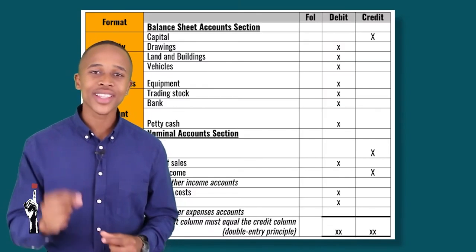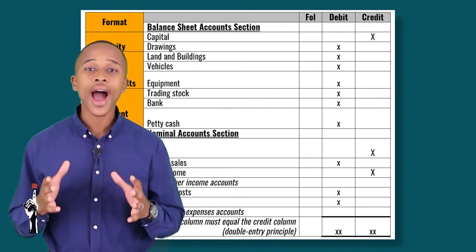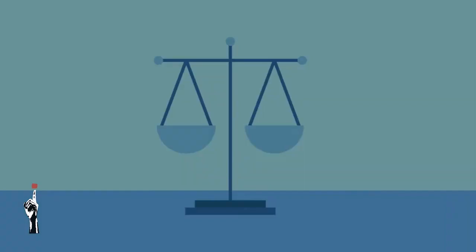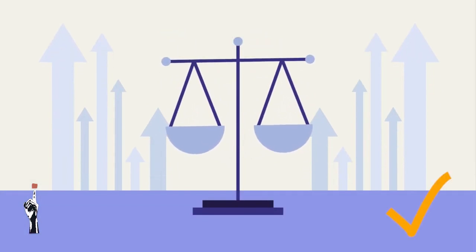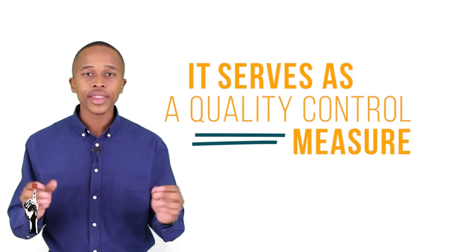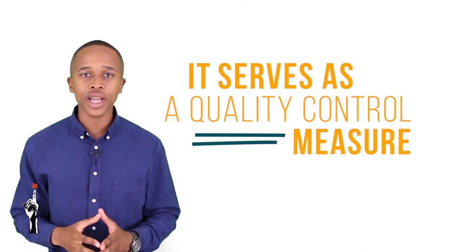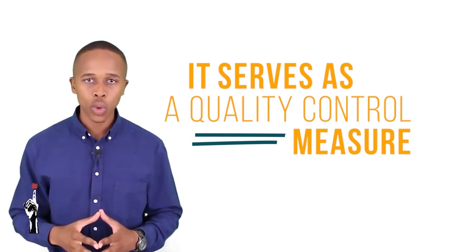Grade 9s, this marks the end of Lesson 6 for Grade 9 EMS. Today we looked at how the trial balance works. Remember, it's very important that the trial balance always balances — the debit side must equal the credit side. The trial balance is almost like a quality control. If the balance is not in place, then something has been done wrong. Always make sure that each and every step is done 100% correctly so that the trial balance always equates.